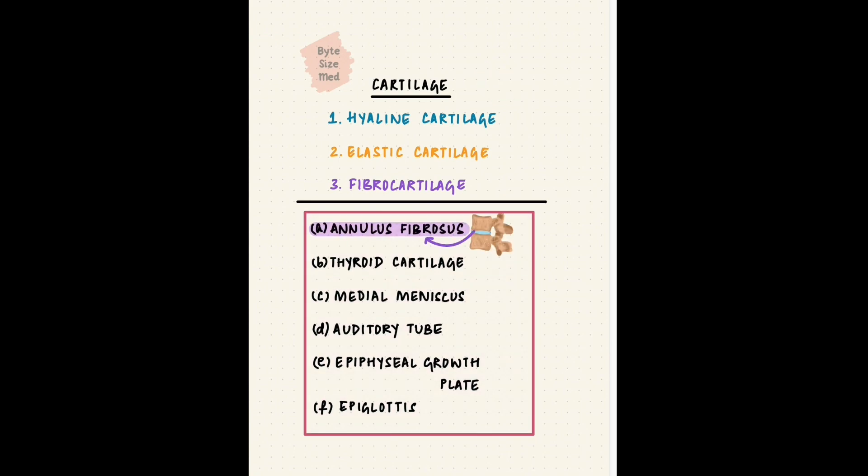The annulus fibrosus is part of the intervertebral disc. It's layers of fibrocartilage. The thyroid cartilage is a laryngeal cartilage. It is hyaline cartilage. The medial meniscus is a shock absorber in the knee joint. It's fibrocartilage. The auditory tube or the eustachian tube is elastic cartilage. The epiphyseal growth plate undergoes ossification for bones to reach their final length, hyaline cartilage. Lastly, the epiglottis, the easiest one, E for E, elastic cartilage.